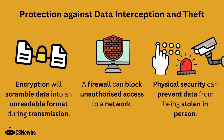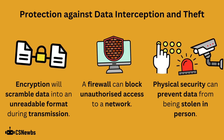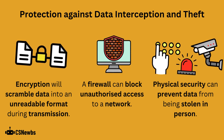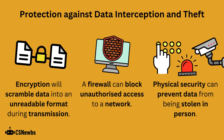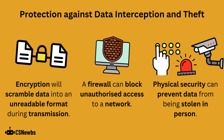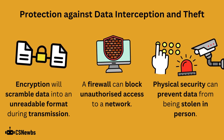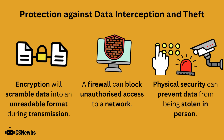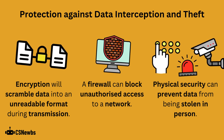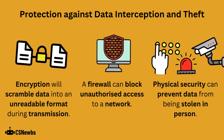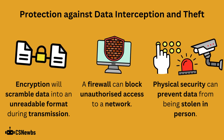To protect against data interception and theft, encryption should be used to scramble data into an unreadable format during transmission. A firewall can block unauthorized access to a network, and physical security can be used to prevent data from being stolen in person.